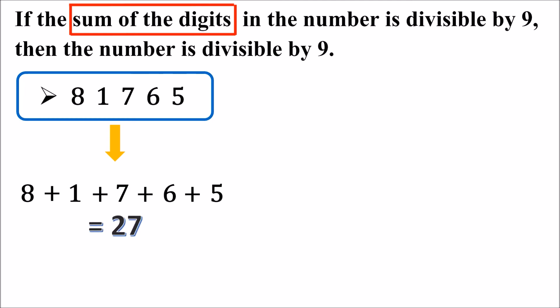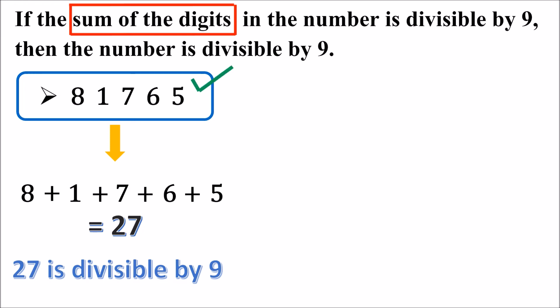The sum of all the digits is 27. Is 27 divisible by 9? Yes, 27 is divisible by 9, because 9 times 3 is 27. Therefore, the given number is divisible by 9.